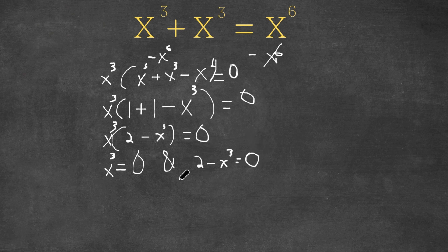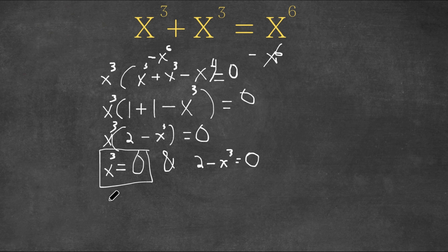Let's solve our first equation. We have x to the power of 3 equals 0. What to the power of 3 equals 0? 0 is the only number to the power of 3 that equals 0. So our first solution is x equals 0.